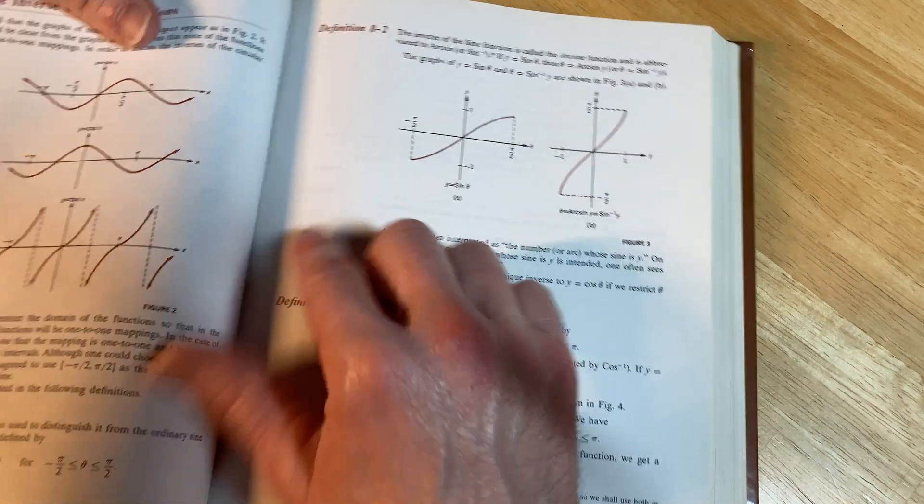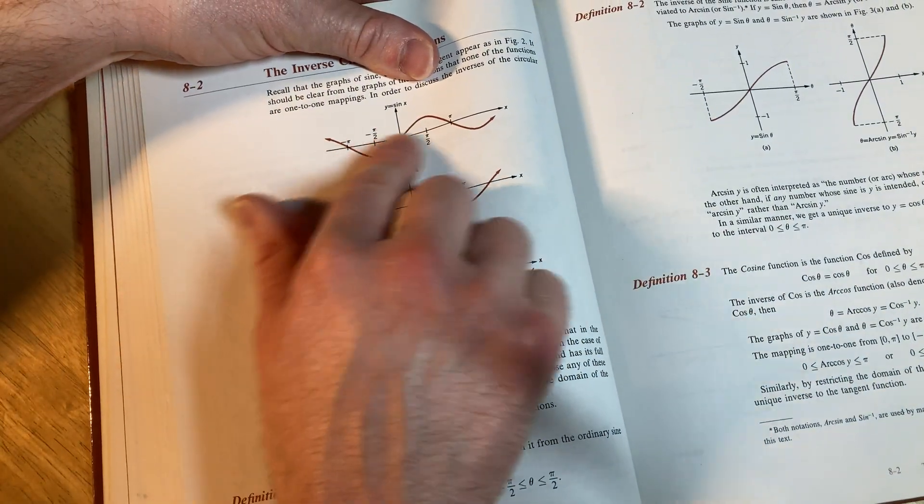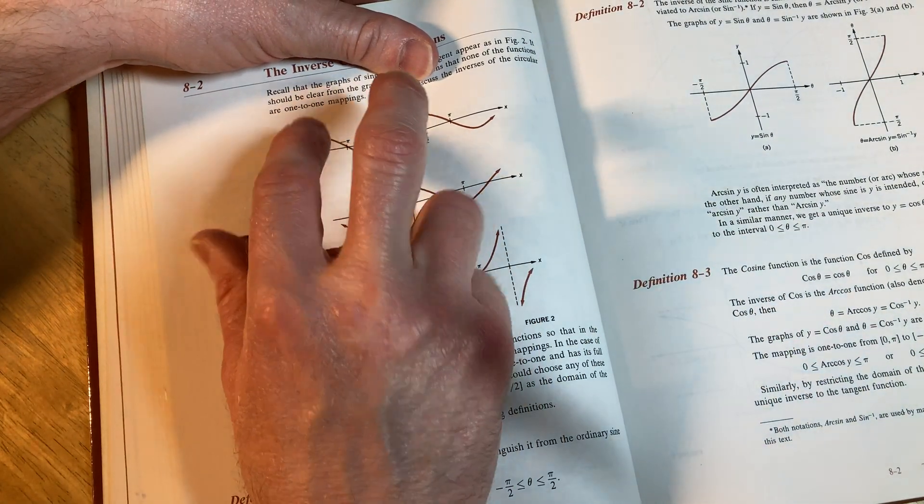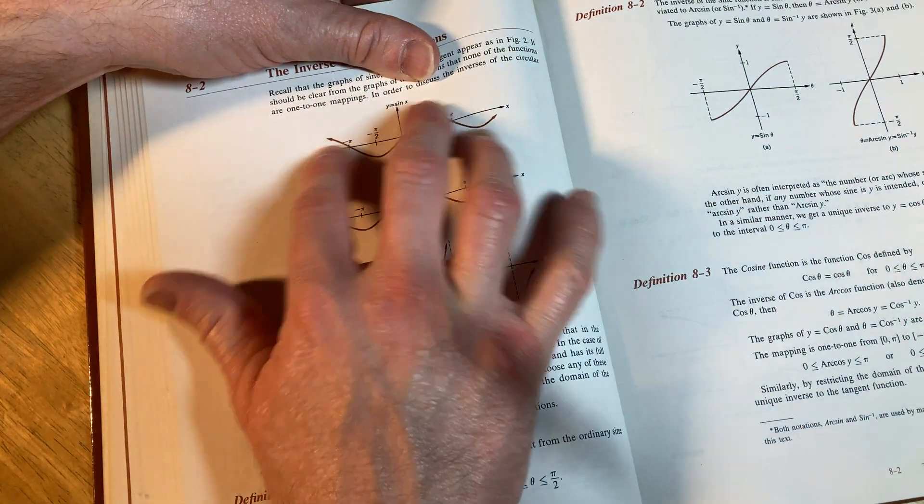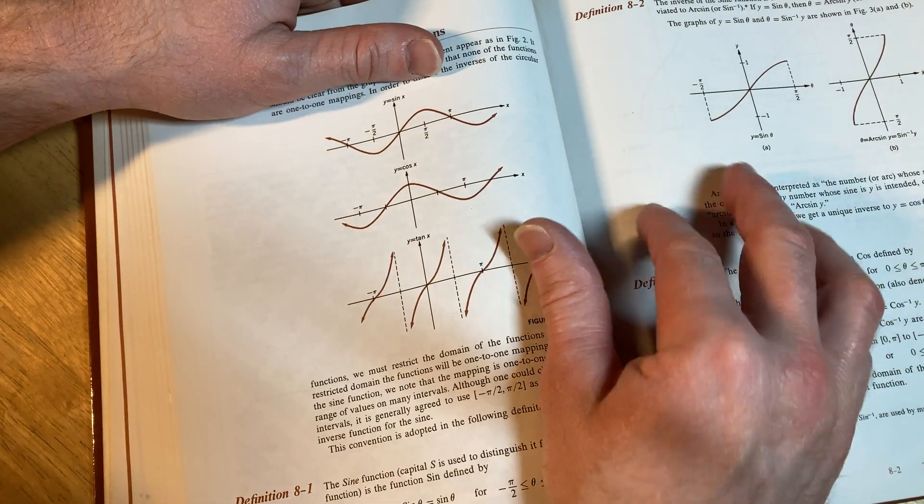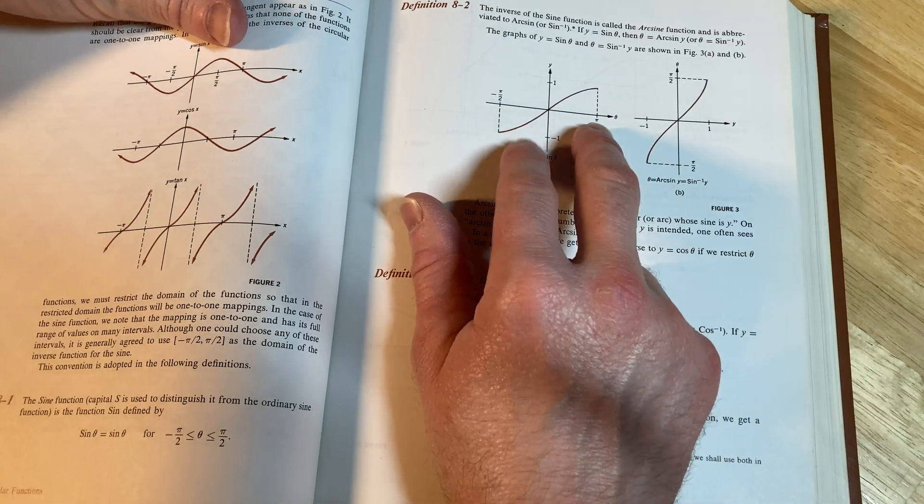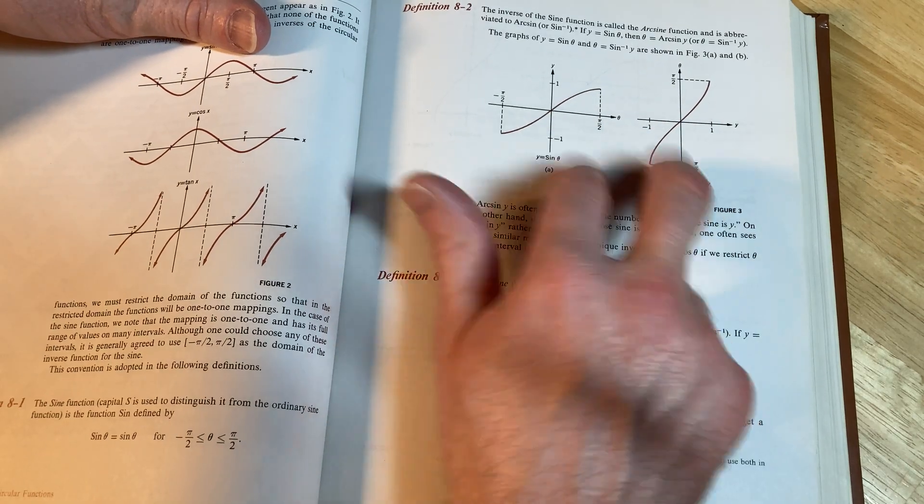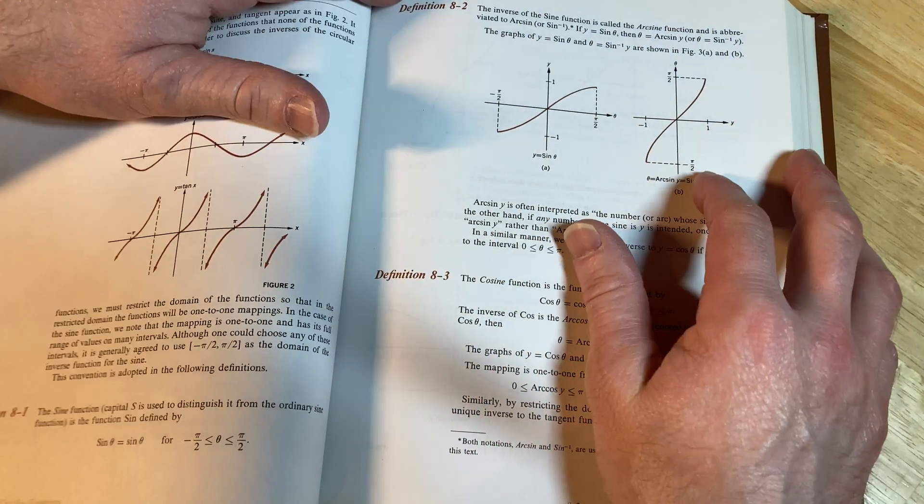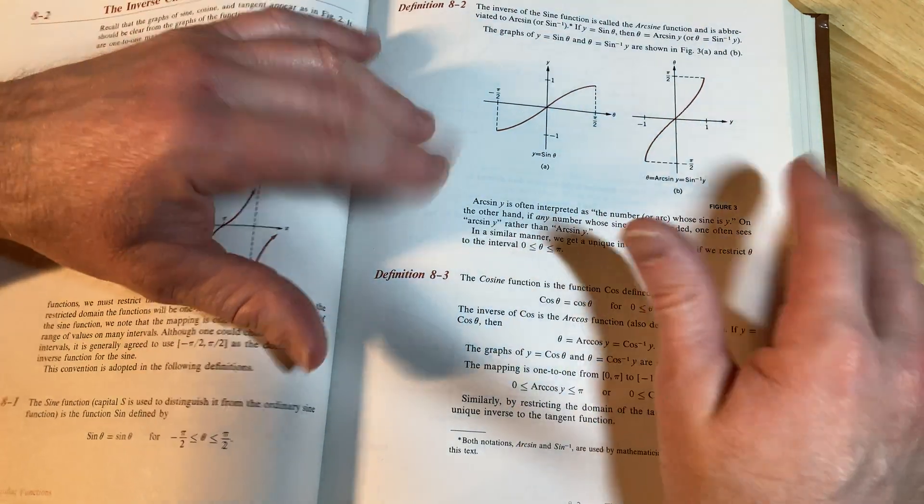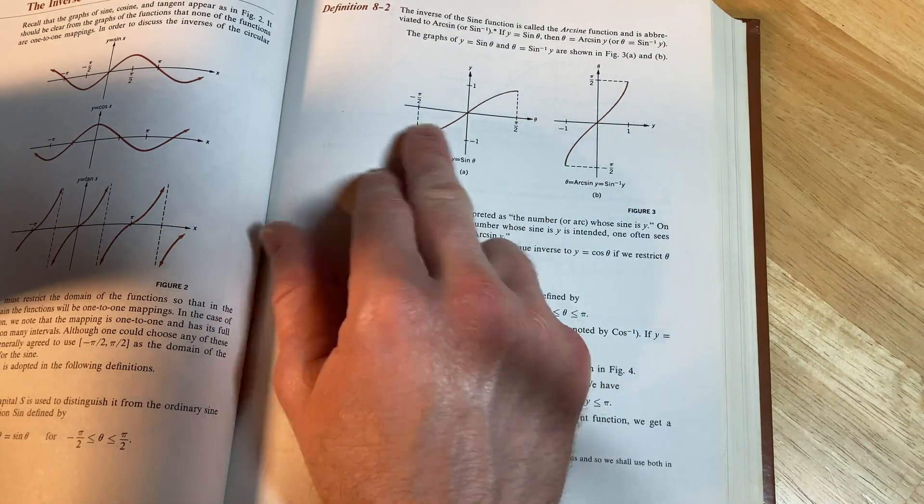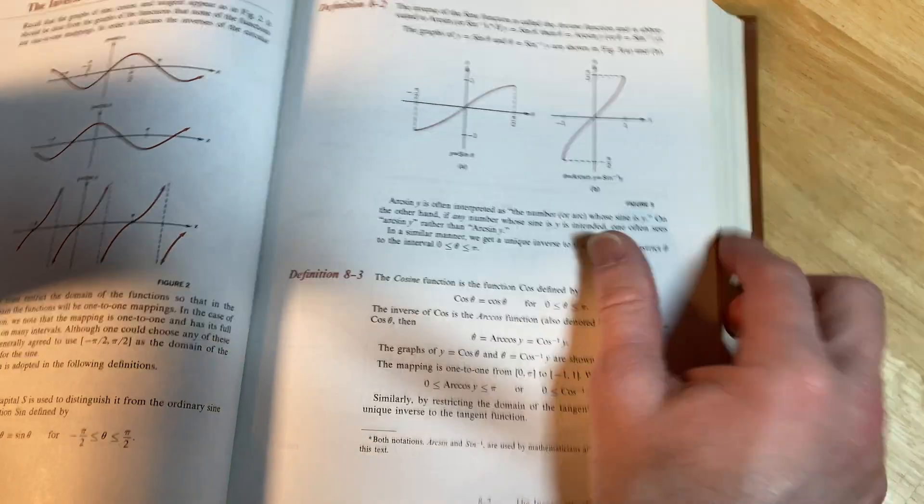But the reason you do that is because if you look here, this function is not one-to-one. You won't be able to find an inverse. So you basically have to pick a region or an interval where it's one-to-one. So this is the one people usually pick. But in theory, you could pick other intervals and create a new sine function, and it would be one-to-one. It doesn't have to be just this one. You can define another one if you wanted to, but this is the one people use.